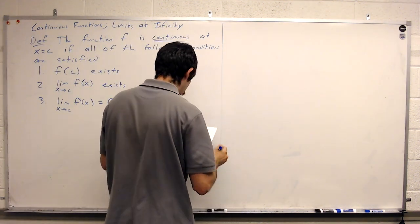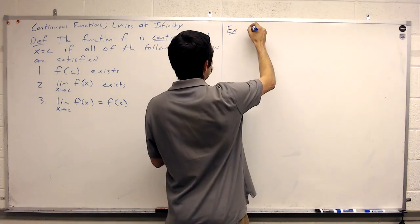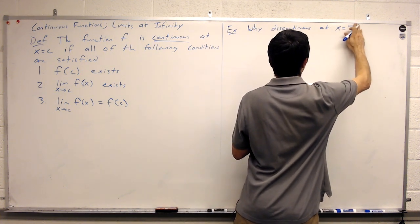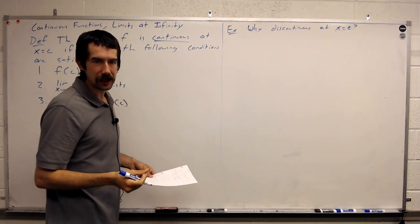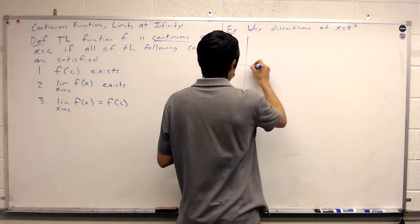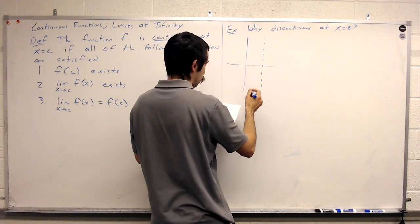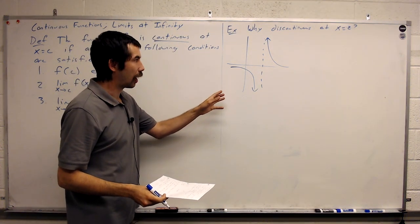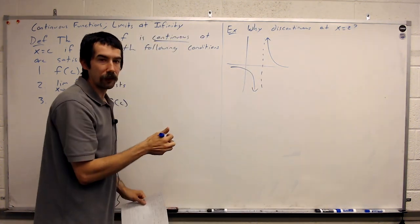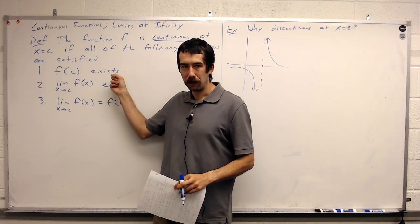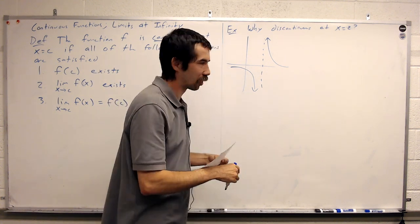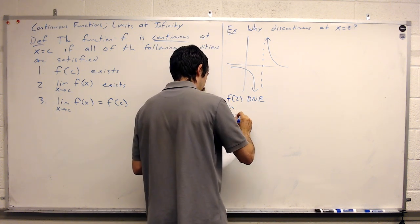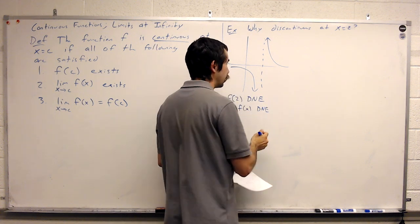Let's take a look at an example. So let's answer why a function is discontinuous at x equals 2. Discontinuous is the opposite of continuous. So in our first example, why is this curve discontinuous at x equals 2? Let's say this dashed line is x equals 2. Well, the function is not defined at 2, so we automatically know it's discontinuous. The limit also doesn't exist, so this fails all of the conditions — conditions 1 and 2.